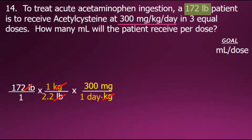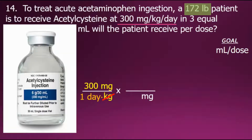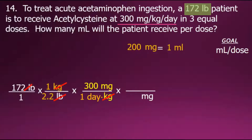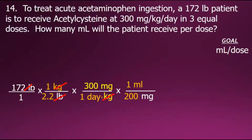Our goal is to convert milligrams per day into milliliters per dose. To do so, we need to establish a conversion fraction that has milligrams in the denominator. Looking at the medication on hand, we see that there are 200 milligrams per milliliter. We'll use that relationship expressed as a conversion fraction to convert the final unit from milligrams, canceling that common factor out and leaving milliliters per day.